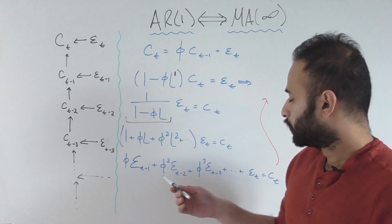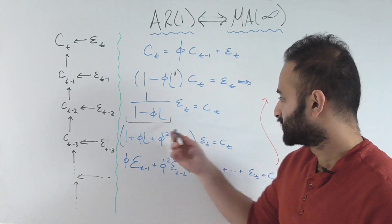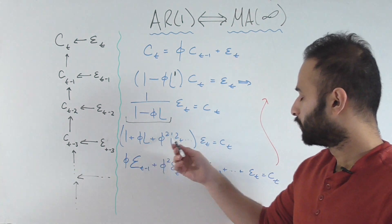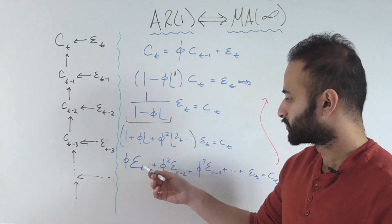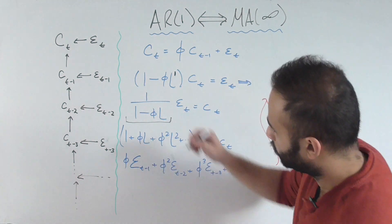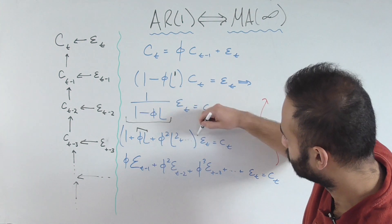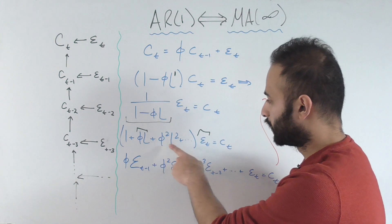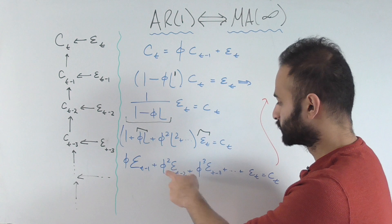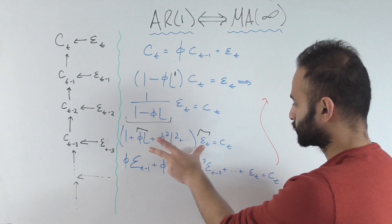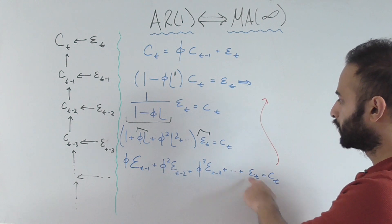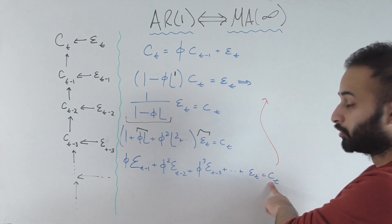Now we can take this whole thing and apply each term in the sum to ε_t. When we do that, we get φ times ε_t-1. That's the product of φL and ε_t. φ²L² times ε_t gives us the second term and so on. I've taken the first term, which is just ε_t, and put it at the very end. All this is equal to c_t.